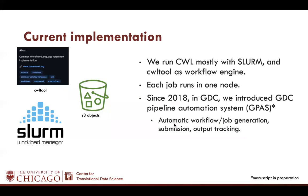Our current implementation for GDC is we run CWL mostly with CWL-tool as our workflow engine. Each job runs on one node because all the inputs are in S3 object store, so each job will have a download and upload part. Since 2018 in GDC, we introduced the GDC Pipeline Automation System, called GPASS. It has automatic job generation, submission, and output tracking. It helps us in day-to-day production and is really useful at our scale.